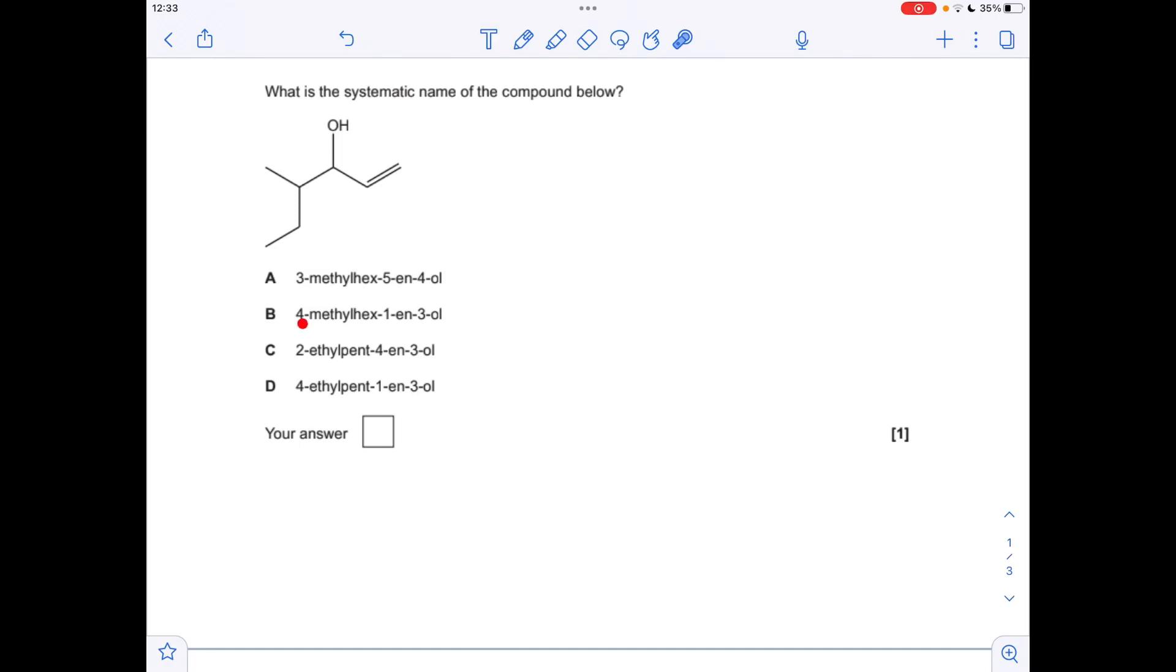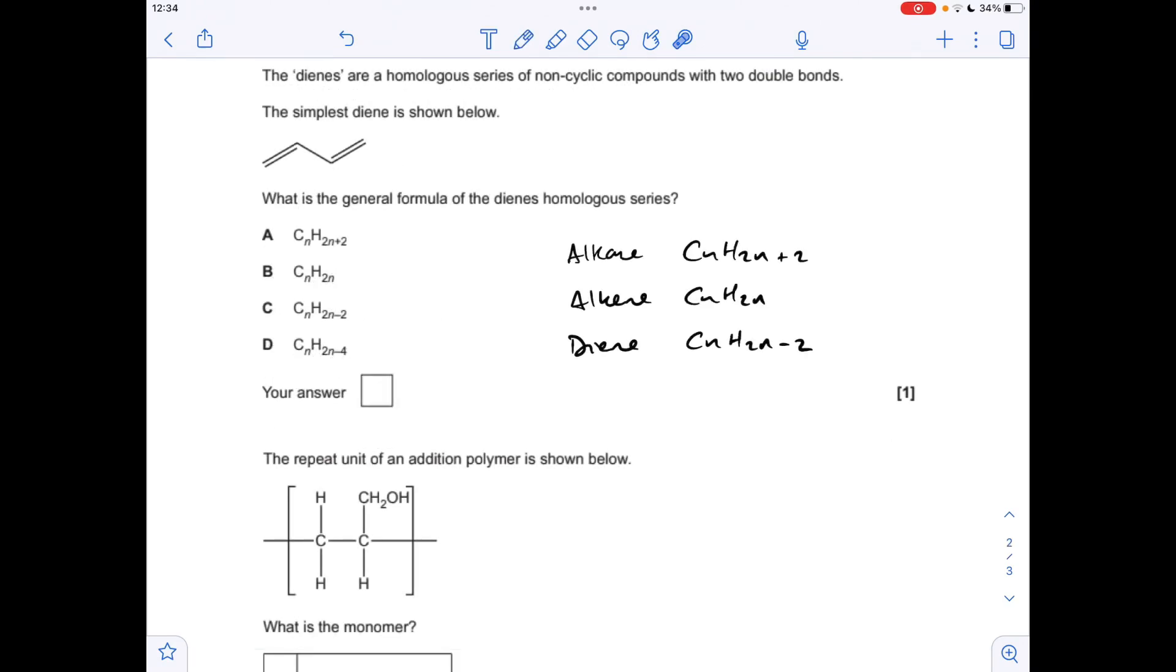We've got a methyl group at carbon number four, so the answer is B: 4-methylhex-1-ene-3-ol.